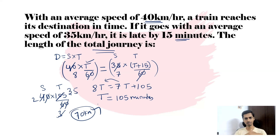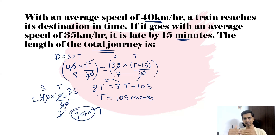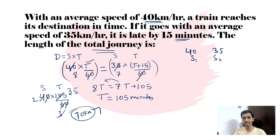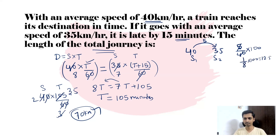Now for the second method — the percentage shortcut. We've discussed this in our percentage session; the link will be in the description. In the first case the speed is 40 km/h, in the second it is 35 km/h. Speed 2 is 5 km/h less than speed 1. Converting to percentage: 5/40 = 1/8 = 12.5%. So speed is decreased by 12.5%.